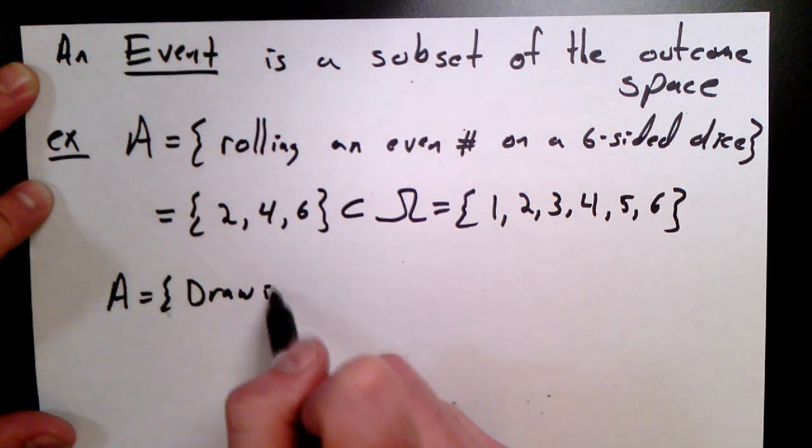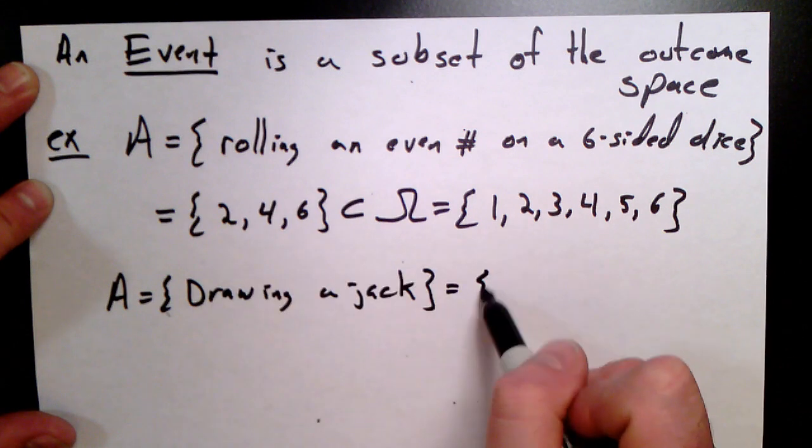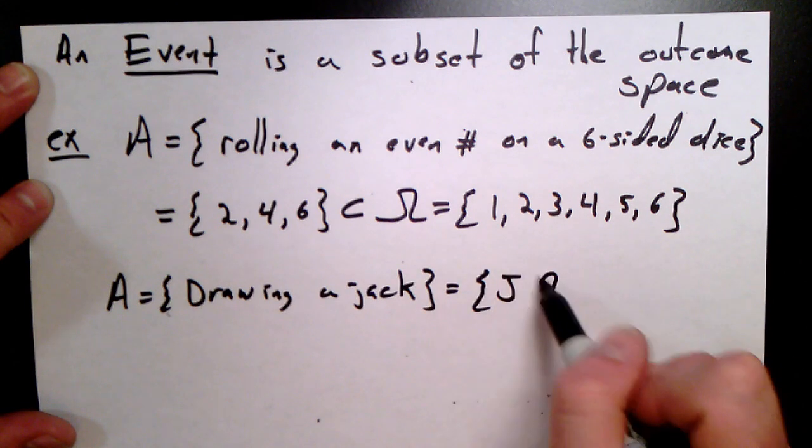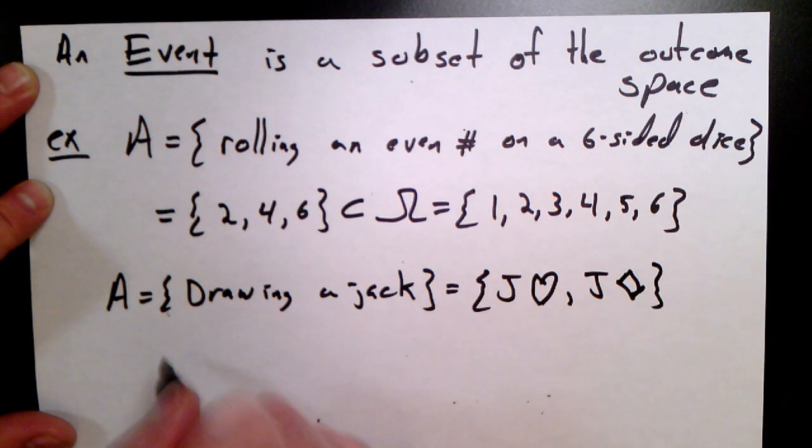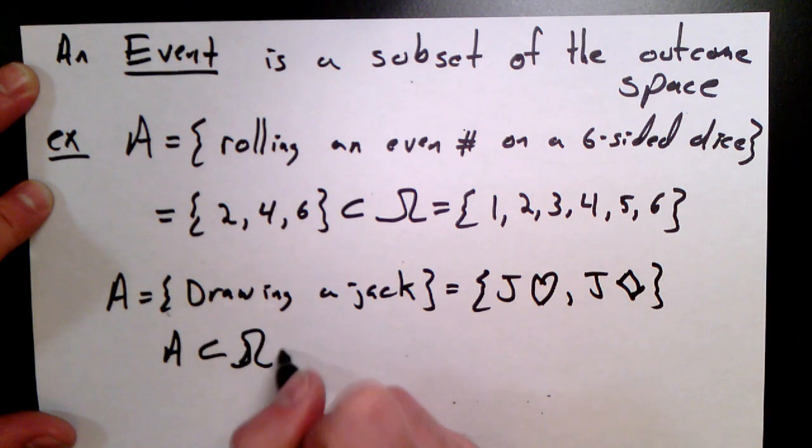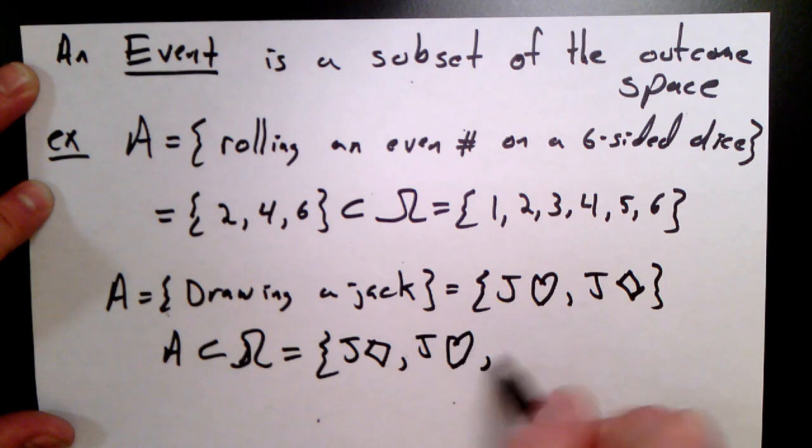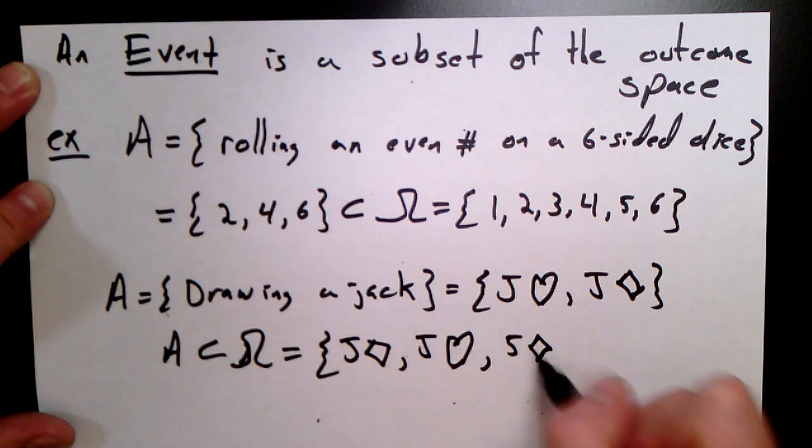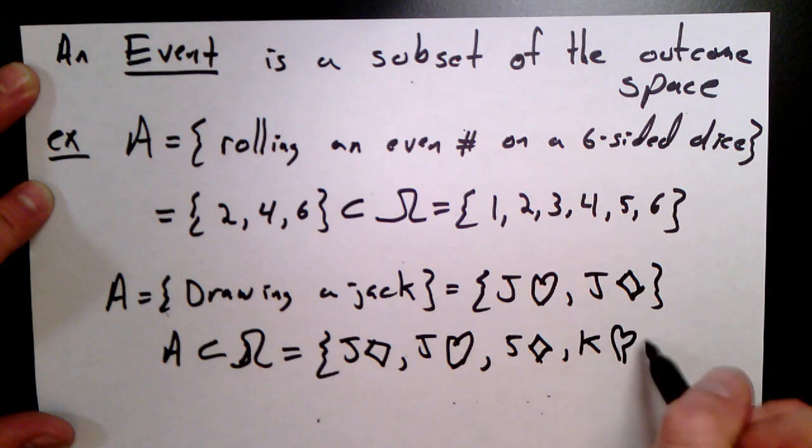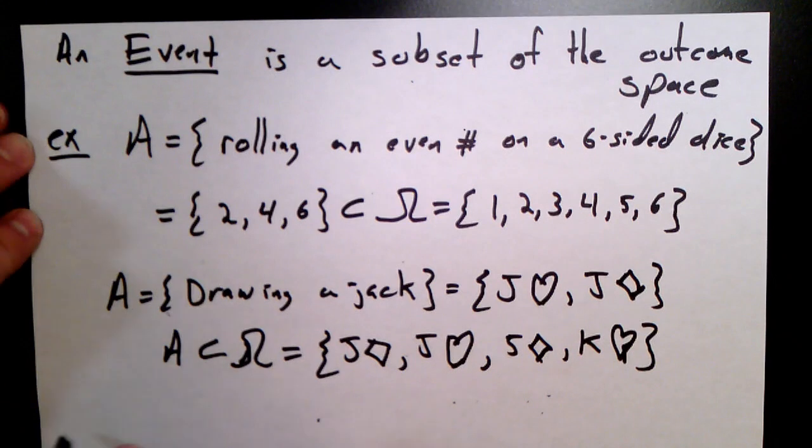Another event might be drawing the jack, just a jack, that is. Draw a jack. So that would either be the jack of hearts or the jack of diamonds, if we only had the four cards we had shown previously. So now, that's a subset of our outcome space, which was made up of the jack of diamonds, the jack of hearts, the five of diamonds, and the king of hearts. So again, an event is just a subset of an outcome space.